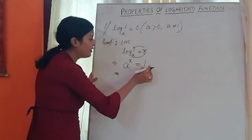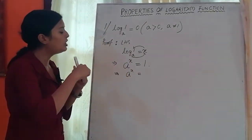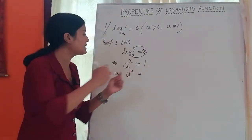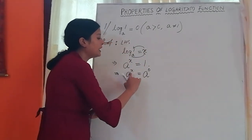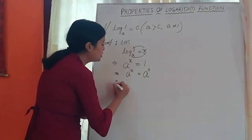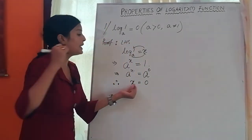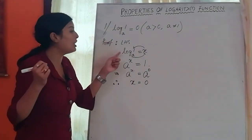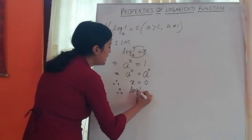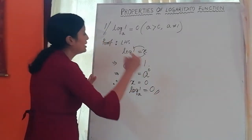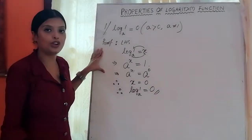So we have a to the power x equals 1, and we know a to the power 0 equals 1. Comparing both sides — the bases are the same — so x equals 0. Since x is log 1 base a, therefore log 1 base a is equal to 0. Proved. This is very easy and important, so please note it down.